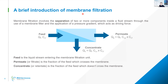And in the concentrate, because we need to close the mass balance, we have a higher concentration of such species. The flow that comes in is split in two, so the permeate is a bit smaller in quantity than the feed, and the concentrate as well.